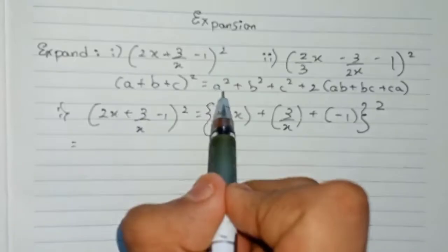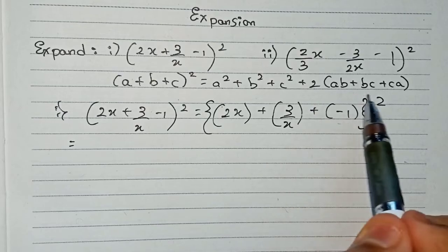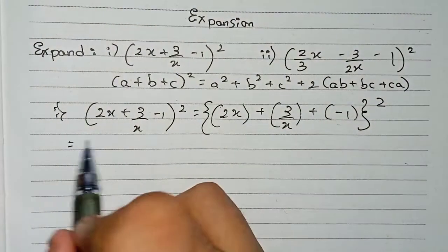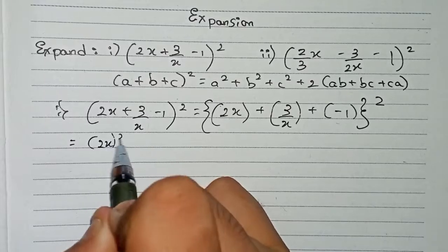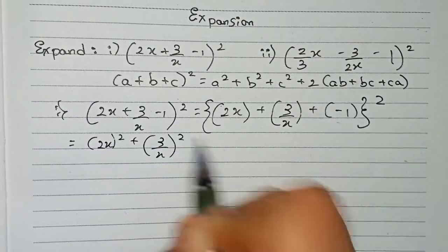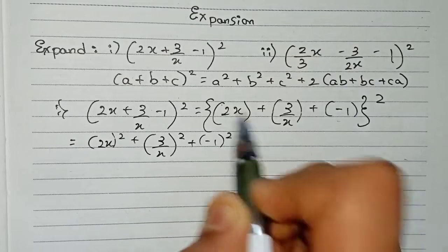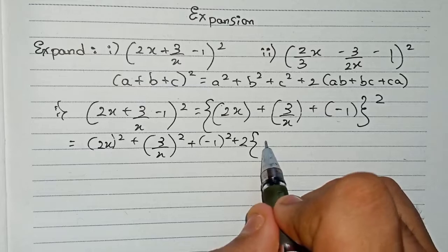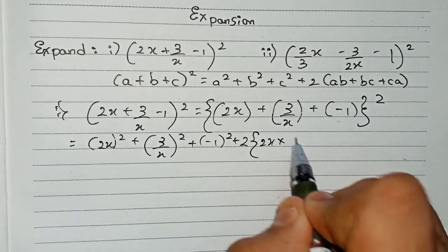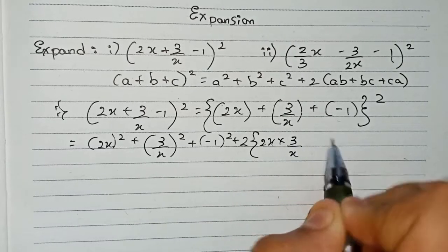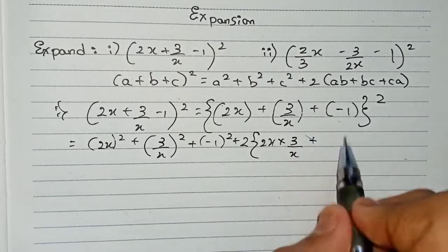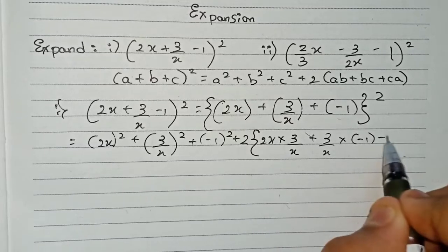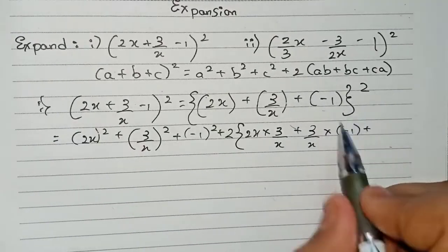According to the identity a² + b² + c² + 2ab + 2bc + 2ca, we now put in the values: (2x)² + (3/x)² + (-1)², then plus 2 into — first 2x × 3/x as ab, then plus 3/x × (-1) as bc, and finally 2x × (-1) as ca.